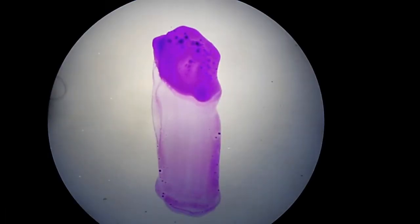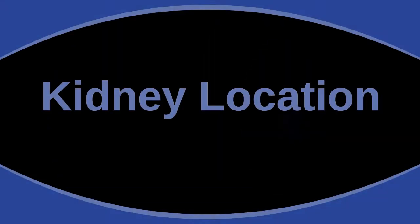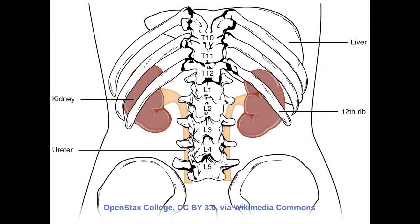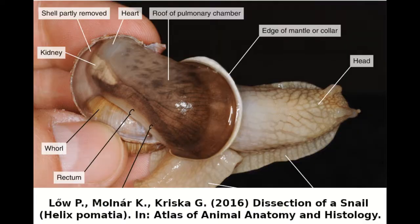Number one: kidney location. You'll have seen images of where kidneys are in vertebrates — two separate organs embedded near the spine and the lower back. But a snail's kidney is in a completely different place. Snails have a single kidney which is located under their shell.